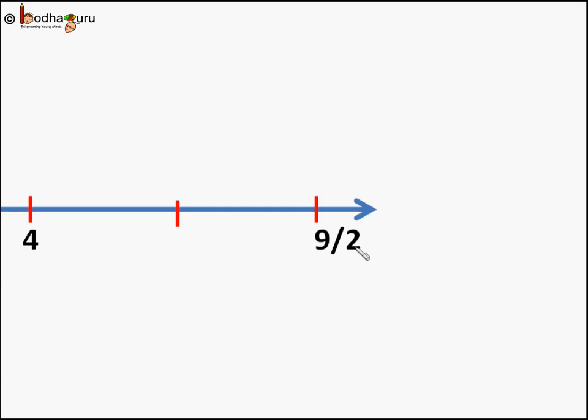Now we take 4 and 9/2 and try to find its midpoint. So it will become (4 + 9/2)/2, which will be 17/4. So now 17/4 is between 4 and 9/2.